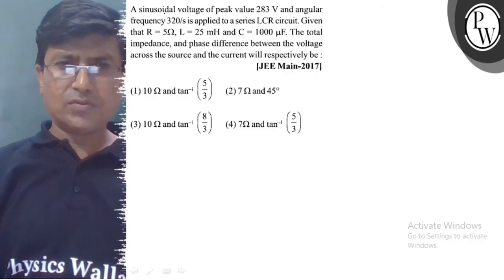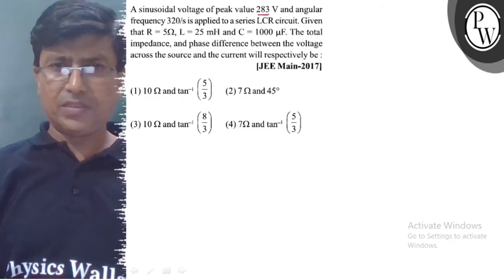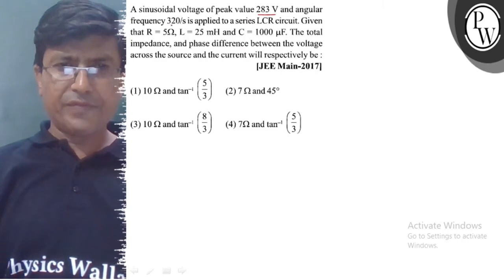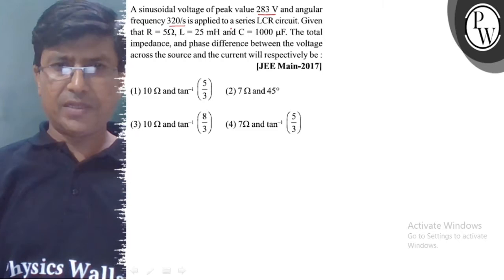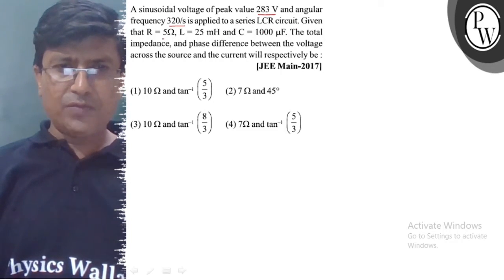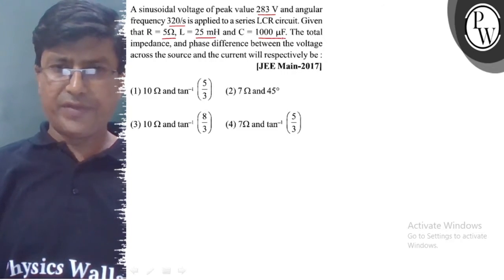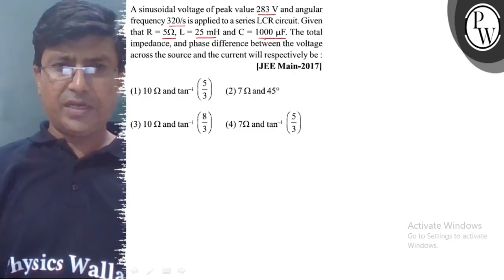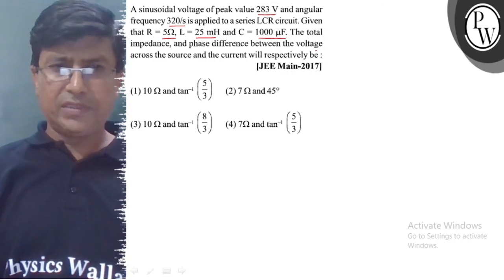A sinusoidal voltage of peak value 283 volt and angular frequency 320 per second is applied to a series LCR circuit, given that R equal to 5 ohm, L equal to 25 millihenry and C is equal to 1000 microfarad. The total impedance and phase difference between the voltage across the source and the current will respectively be.